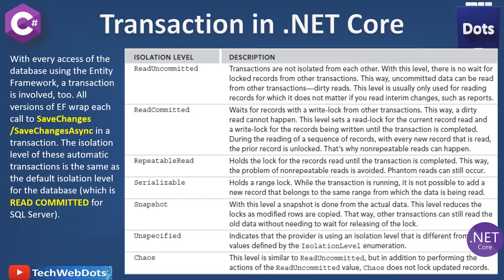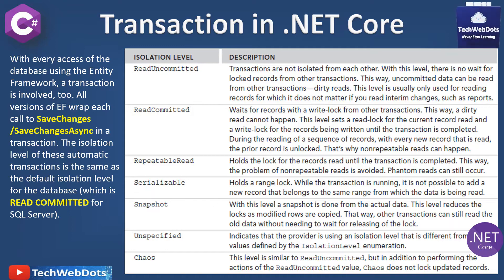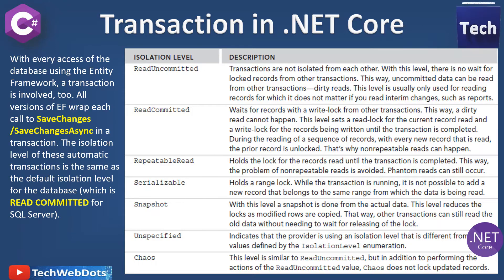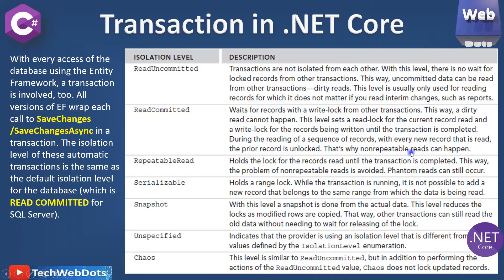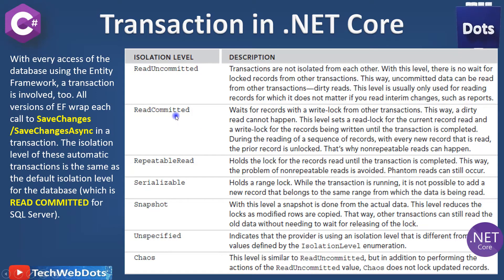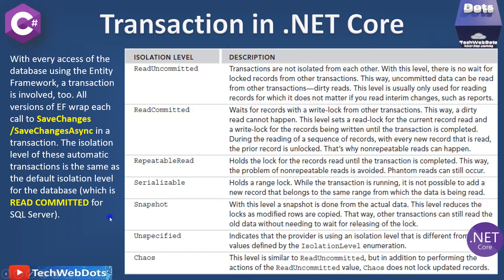This level sets a read lock for the current record being read, and a write lock for the record being written until the transaction is completed. During the reading of a sequence of records, with every new record that is read, the prior record is unlocked — that's why non-repeatable reads can happen. This is the definition of Read Committed; you can check the other isolation levels as well.